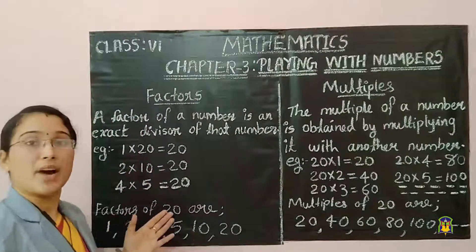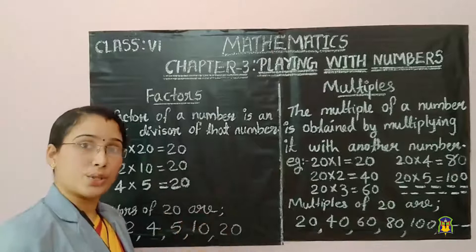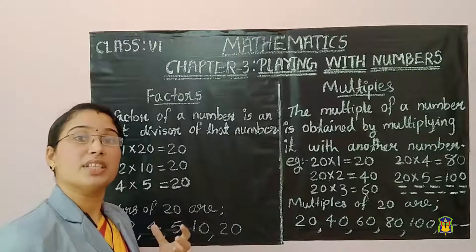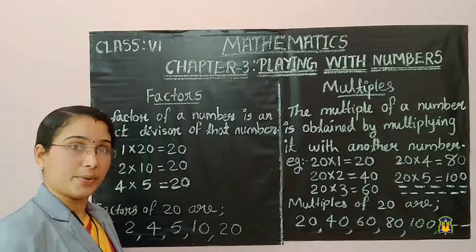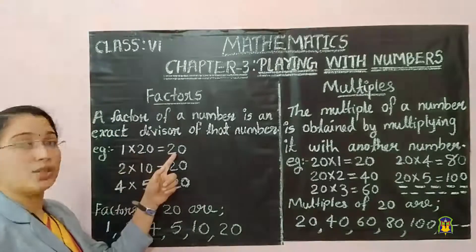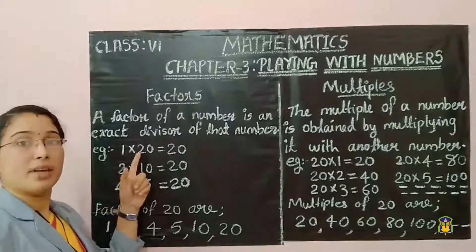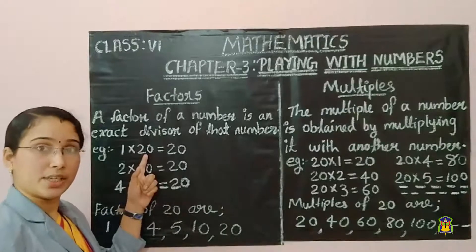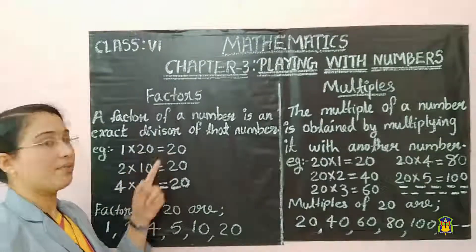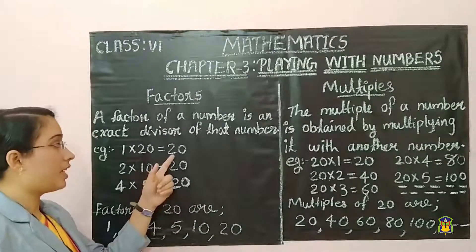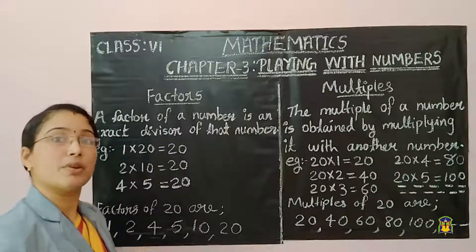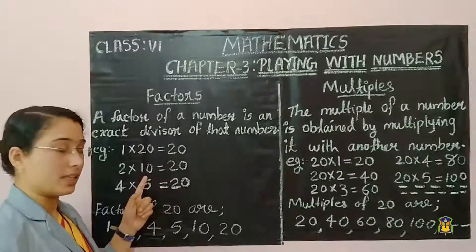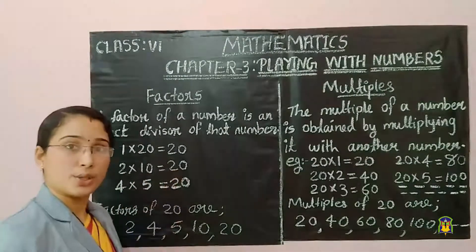For example, here we want to find out the factors of 20. For finding the factors of 20, first we want to know which numbers give exact division. If you are dividing 20 by 1, we will get remainder 0. That means our quotient is 20, so 1 into 20 gives 20. If you are dividing 20 by 2, we will also get remainder 0, and the quotient is 10, so 2 into 10 gives 20.